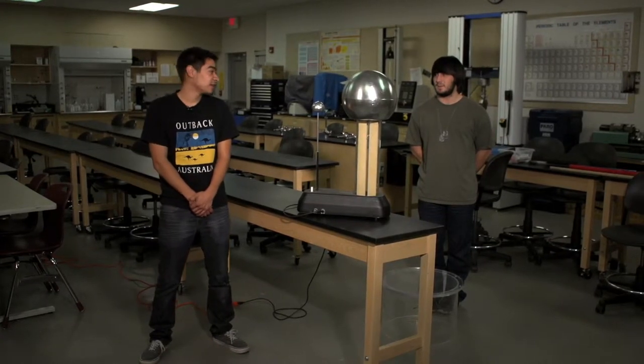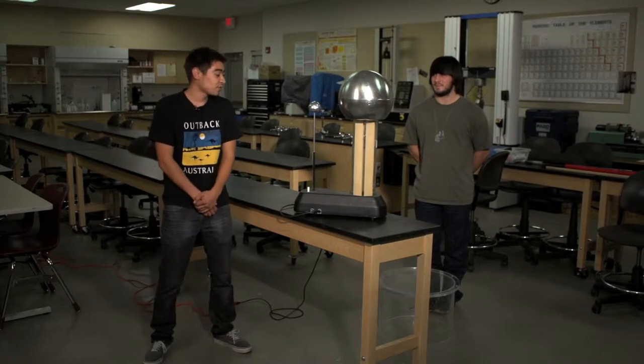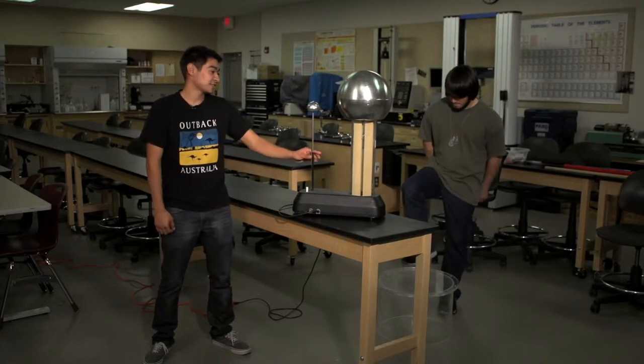In this experiment, hair on end, we're going to have a volunteer from the audience who has preferably straight, longer hair. We're going to have them stand on the platform, which is plastic, so it's insulated. You can also use a milk crate.